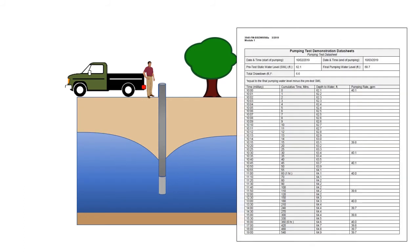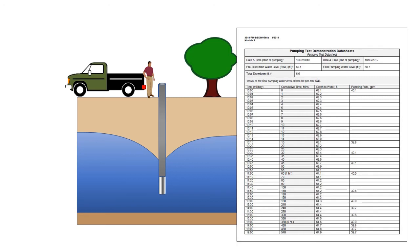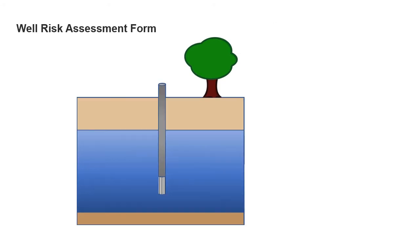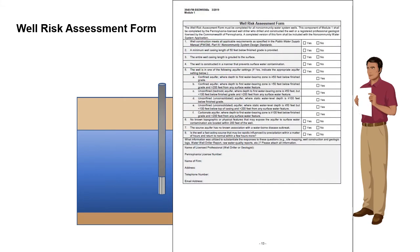The applicant should request that the pumping test operator provides a copy of the completed data sheets to them, along with any field notes and additional information that may have been generated during the tests. The contracted well driller should also complete the well risk assessment form found on page 13 of the Module 1 application.